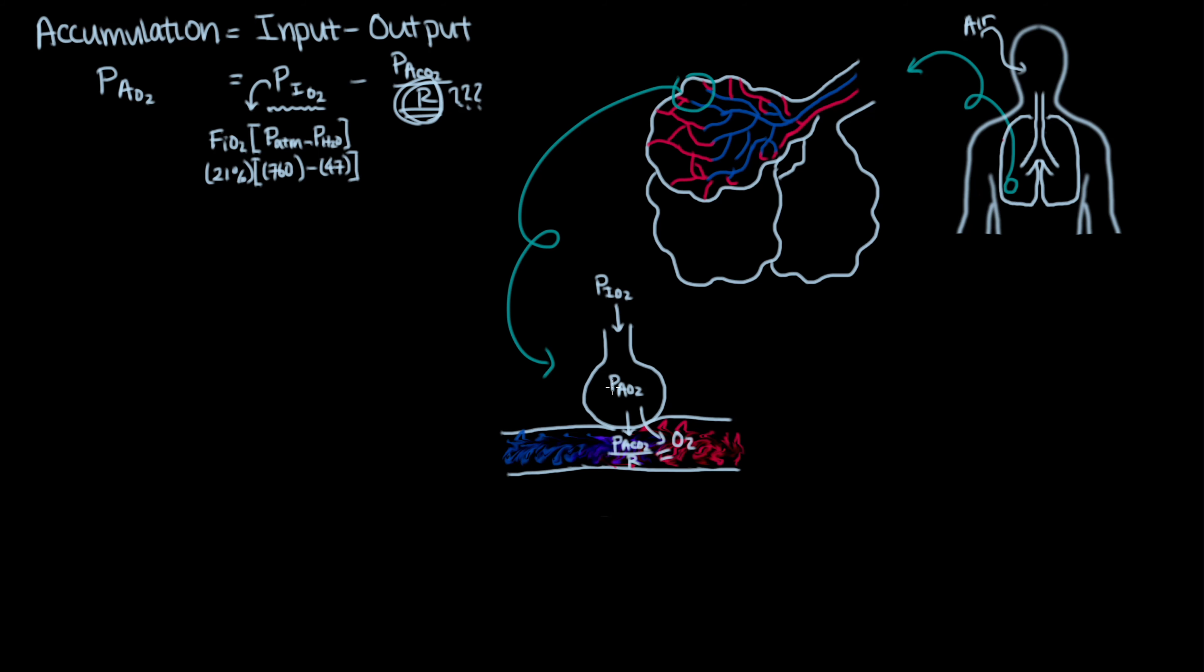As discussed earlier, as the blood meets the capillary interface with the alveolus, the blood drops off carbon dioxide and picks up oxygen. Conveniently, this exchange happens at a ratio of about 5 mmHg of oxygen for every 4 mmHg of carbon dioxide.